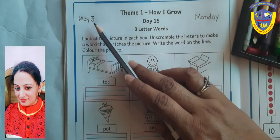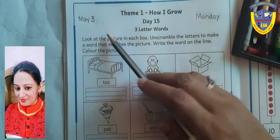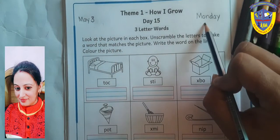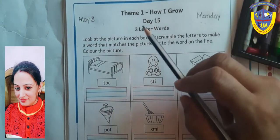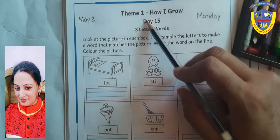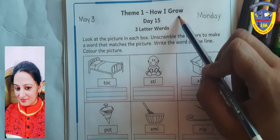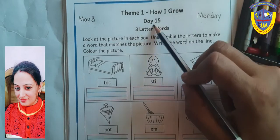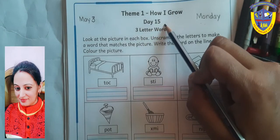Students, write today's date: May 3, day Monday, Theme 1, How I Grow, Day 15.